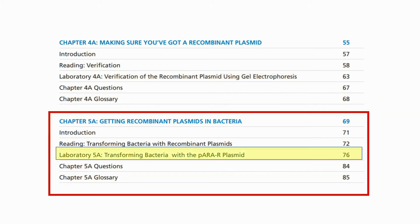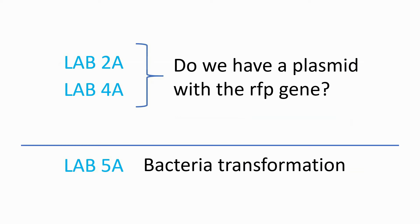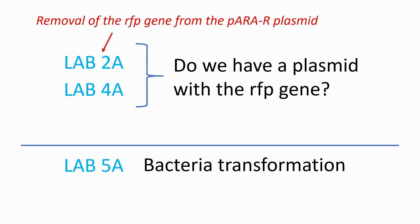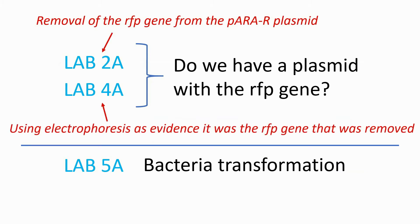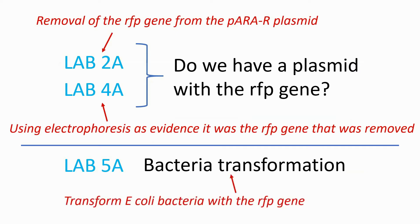Lab 5A is where we transform E. coli bacteria with the PARA-R plasmid. If we map these three main labs, we can group Labs 2A and 4A together. In Lab 2A, we attempt to remove the RFP gene from the PARA-R plasmid. In Lab 4A, we use electrophoresis to look for evidence that we were successful. In Lab 5A, our goal is to transform E. coli bacteria with the RFP gene.